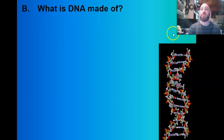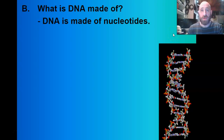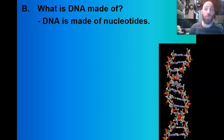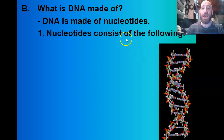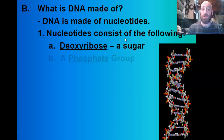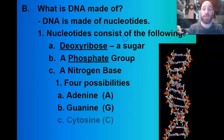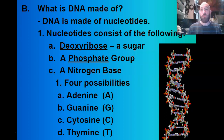Let's talk about the structure — what is DNA made of? Essentially it's made of something called a nucleotide. Thinking back to the macromolecules unit, there are four types: proteins, lipids, carbohydrates, and nucleic acids. Nucleic acids are made up of smaller subunits called nucleotides. A nucleotide is made up of a deoxyribose sugar, a phosphate group, and a nitrogen base. There are four different types of nitrogen bases: adenine, guanine, cytosine, and thymine — referred to as A, G, C, and T.